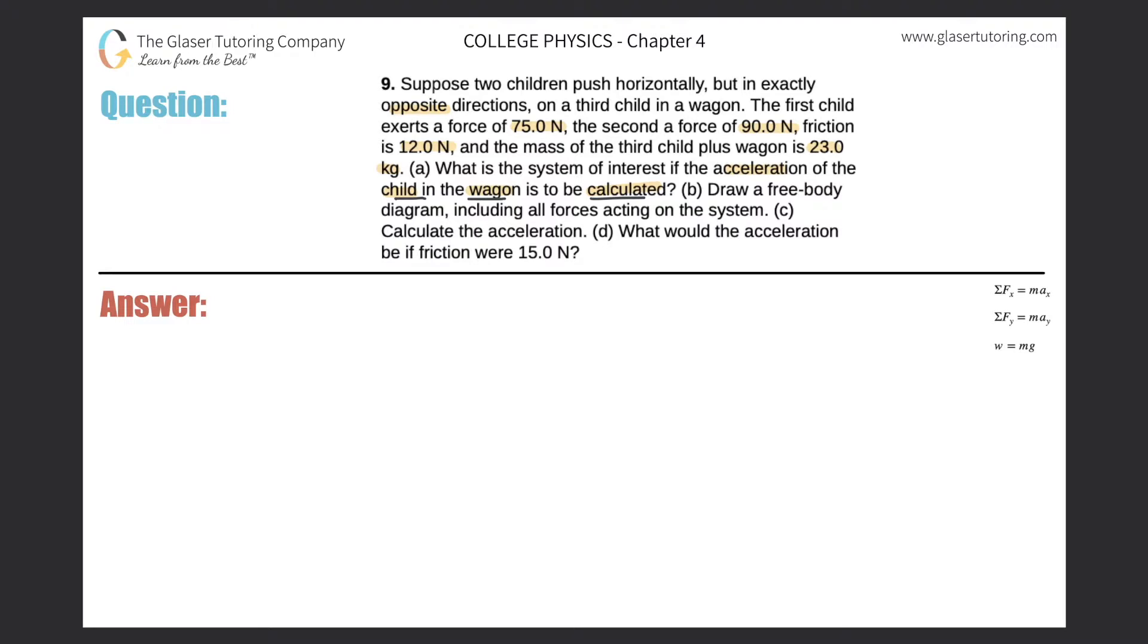Letter B, draw a free body diagram. So let's just draw a little picture here. It appears that we have a child in a lopsided cart. So here's the child. This child in the cart has a mass, as it said in the problem, the mass of the third child plus the wagon is 23 kilograms. So this whole thing weighs 23 kilograms.